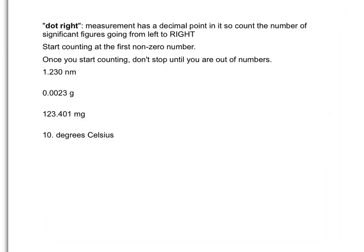The number one is a non-zero number — that will be our first significant figure. The two will be our second, the three will be our third, and the zero will be our fourth. So this measurement has four significant figures, or four sig figs for short.